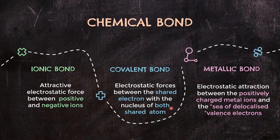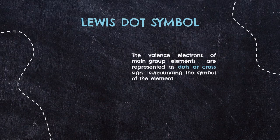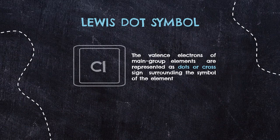Now we know we have three types of chemical bonds. To form these bonds, you will need more than one element with valence electrons on it. Lewis structure is the valence electrons of main group elements represented as dots or cross signs surrounding the symbol of the element. For example, chlorine is located at period 3, group 17. We are interested only in the valence electrons, so there should be 7 electrons surrounding chlorine. Just like the rule for assigning electrons in orbitals, they should be distributed singly before pairing.